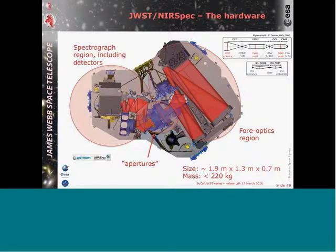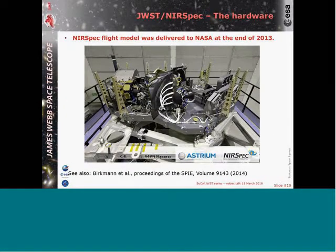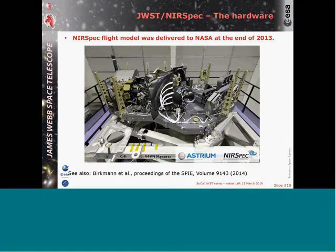The instrument NIRSpec is fairly big: 2m by 1.3m and 70cm, a little more than 200kg. It's a very classical design with an optics region where the sky is re-imaged on our apertures — the slits, the micro-shutters, and the entrance of the integral field unit — and in back you have the spectrograph and the detectors. The real hardware is NIRSpec before we put on the cover — a light-tight NLI cover on golden pillars all around NIRSpec. This was the hardware before we delivered it to NASA in 2013.